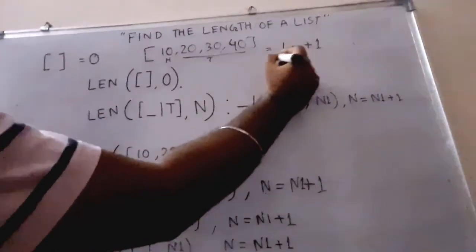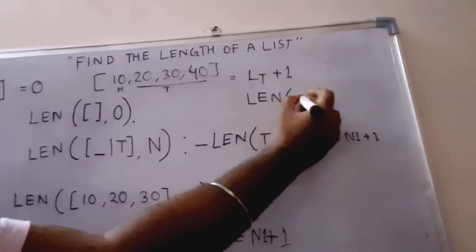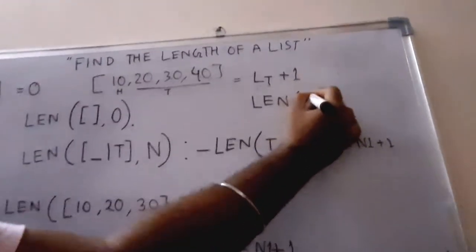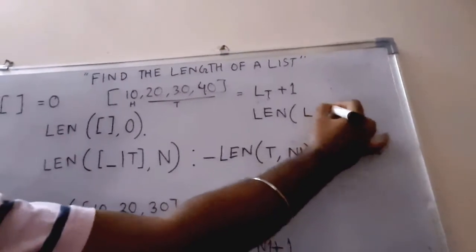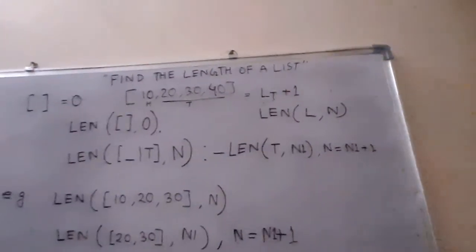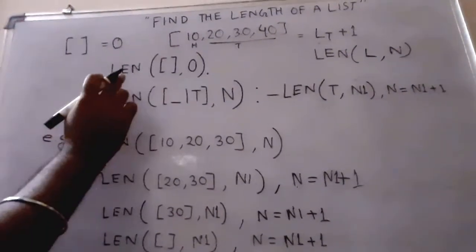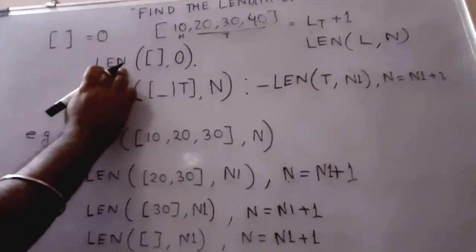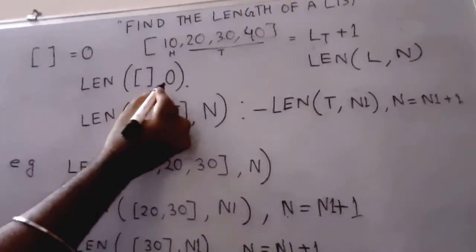Let's define a predicate len. The first argument will be a list, and the second argument will be the length. How can we do it? We're defining clauses like this: if the argument is an empty list, it will return zero.